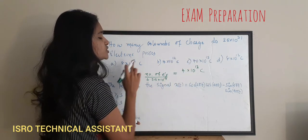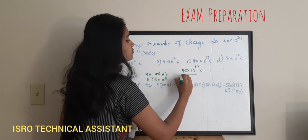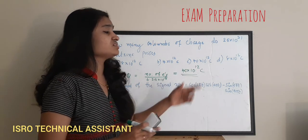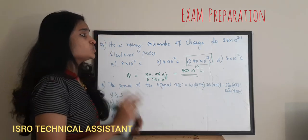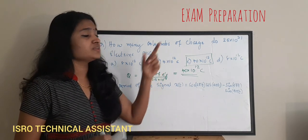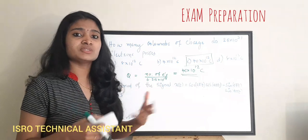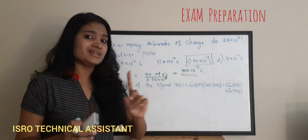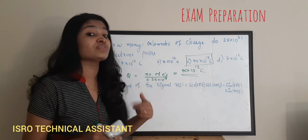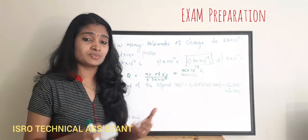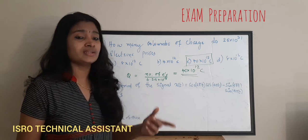Can you see 10¹³ in the options? There is no 13, so we convert: 4×10¹³ = 40×10¹². So the answer is option C, that is 40×10¹² coulomb — the charge possessed by 25×10³¹ electrons. The key thing to remember is that 1 coulomb of charge is possessed by 6.25×10¹⁸ electrons. To find the charge for n electrons, just divide n by 6.25×10¹⁸.